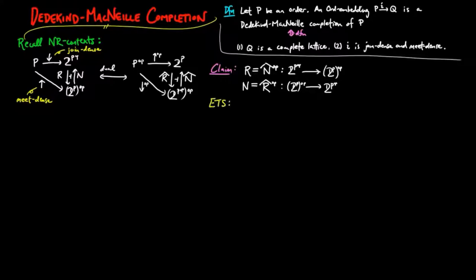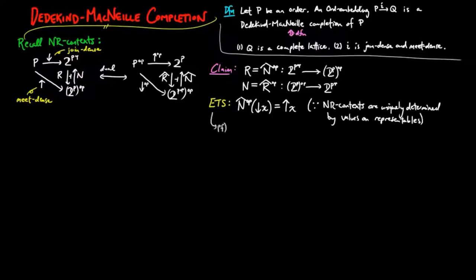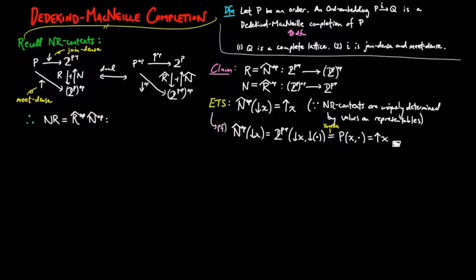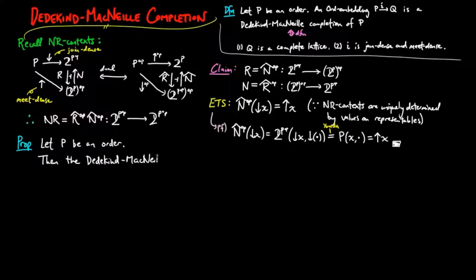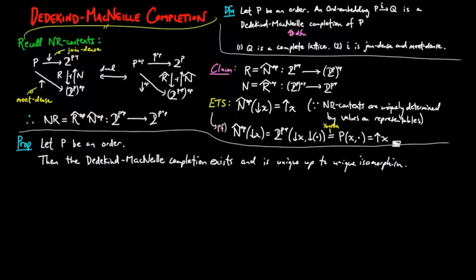Another way to see this is by showing that N-hat op on the lower segment of X is equal to the upper segment of X, for each X in P. We will use this in the following proposition: Let P be an order. Then the Dedekind-McNeill completion exists and is unique up to unique isomorphism.